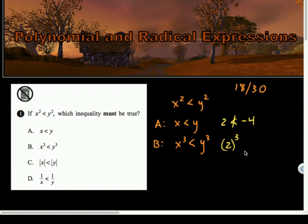2 cubed is probably not less than negative 4 cubed, I'm guessing. 2 cubed is going to be a positive value, and negative 4 cubed is a negative value. Whereas, in the case of squaring negative 4, sorry, squaring negative 4 would have become positive. So, that's a no-go. So, there's a counterexample for B.